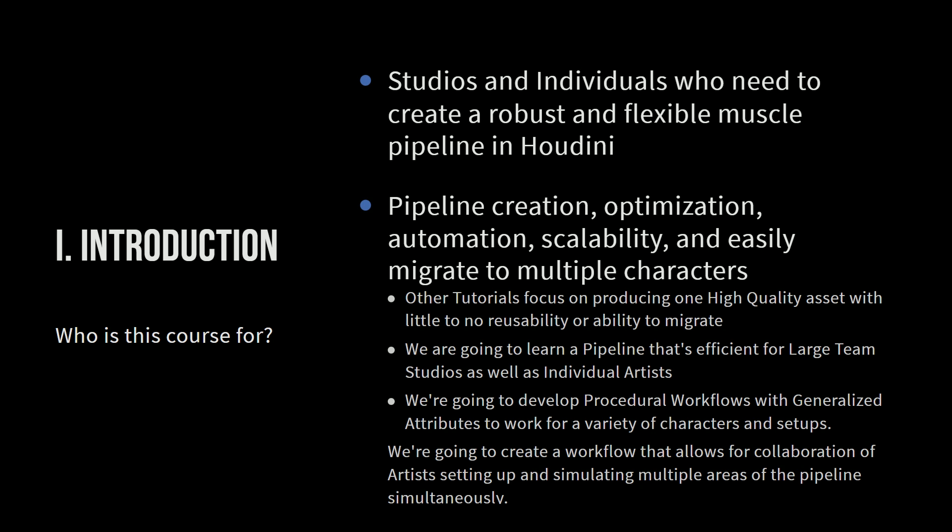Most importantly, we are going to create a workflow that really allows multiple artists to collaborate with each other and work on various parts of the muscle pipeline simultaneously — even multiple parts of the same character simultaneously. If you have the resources of artists, you can really ramp up speed of production. We're going to look at how an individual artist can utilize computing power, like running a local TOPnet on your machine. We're going to look at how you can use Deadline to farm it out to multiple machines, as well as how to split up working on the asset or simulating the asset across multiple people.